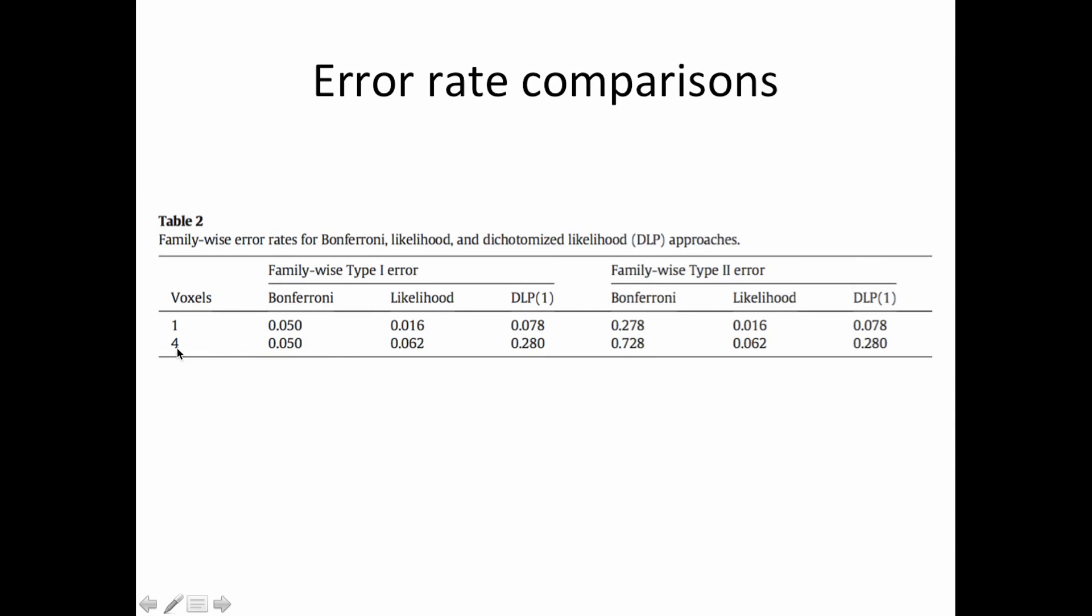All right, with one voxel, we're looking at the type 1 error rate. Obviously, it's 0.05 for Bonferroni. It's going to be a little bit different for these other two approaches because they're just different beasts. So the likelihood, it looks like it's a little conservative. It's 0.01. And for DLP1, it's a little high. It's 0.078. But when you look at the type 2 error rate, so 1 minus these values is your power. So this only has 73% power, 72% power. Not good. Whereas the likelihood method in the DLP, the dichotomized version, have really low type 2 error rates. And by design, of course, the type 2 error rates will always equal the type 1 error rates. So that's just how this method works. So what happens when we introduce a multiple comparison problem? Just ramping it up to four voxels using a Bonferroni correction. The voxels are independent, so this is controlled perfectly at 0.05. The likelihood is 0.06. The dichotomized version is 0.28, so it's a little elevated.